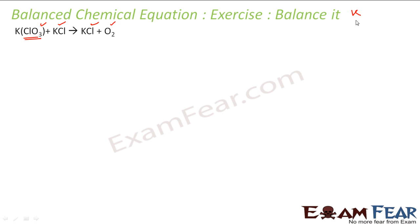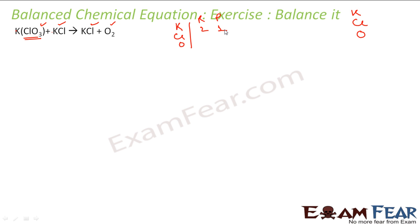Any metal? No. Non-metals: potassium, chlorine, oxygen — all. So oxygen will be put in last because oxygen and hydrogen have the least priority. Let's see the balance. KClO3 — this is my reactant, this is my product. Potassium is 1 in reactant, and in product there is only 1 potassium. But looking at both sides, it is not balanced. Let's multiply this by 2.